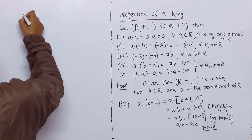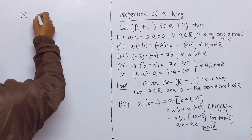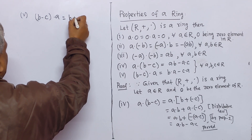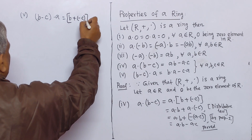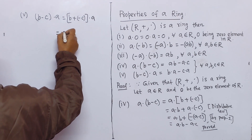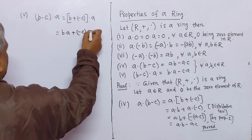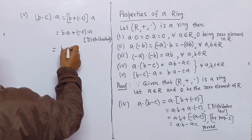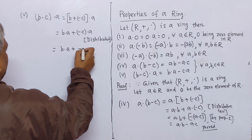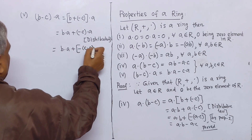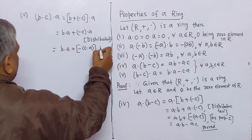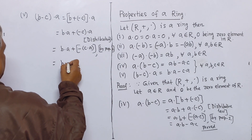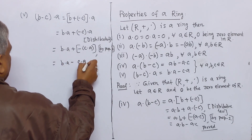Now we prove property 5. (b minus c)·a equals (b + minus c)·a. By distributive property this equals b·a + (minus c)·a. By property 2, (minus c)·a equals minus(c·a). Therefore this equals b·a minus c·a. Proved.